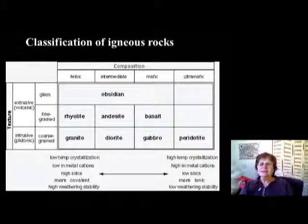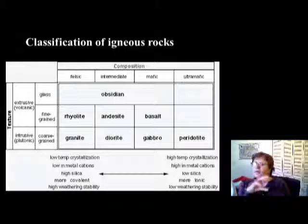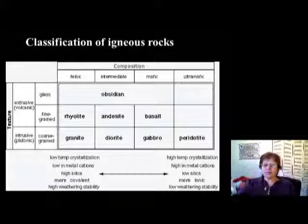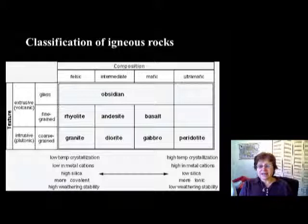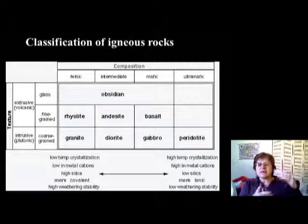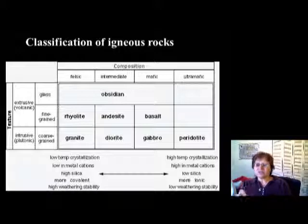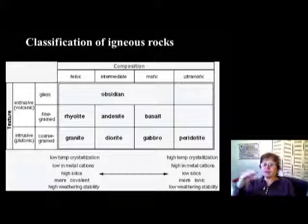This slide shows the classification of igneous rocks. We'll go by groups starting with felsic, intermediate, mafic, and ultra-mafic, and within each group we'll go through the intrusive and the different types of extrusive textures. I'll finish this segment here and continue with the next segment where we go through the rocks. Okay, bye for now.